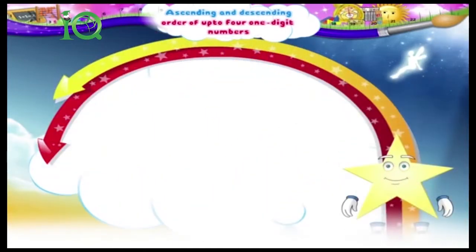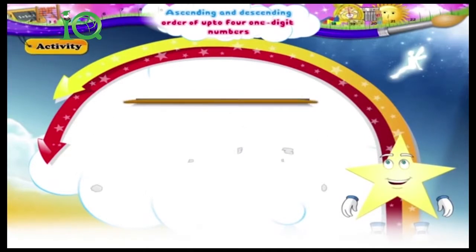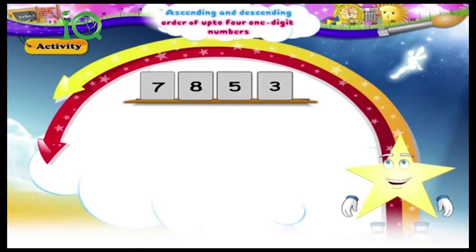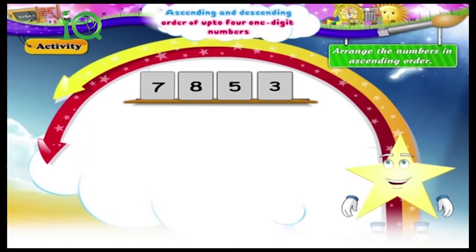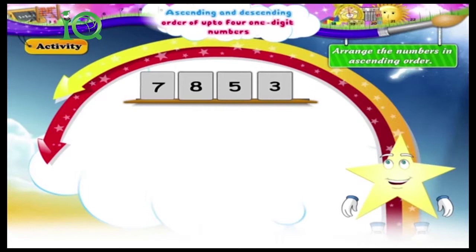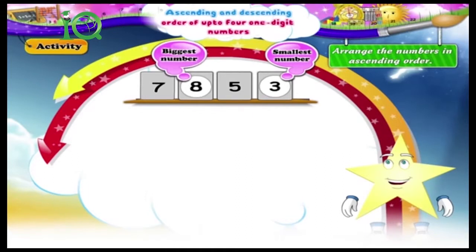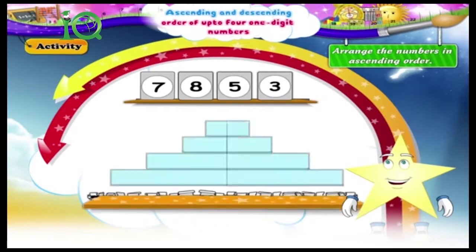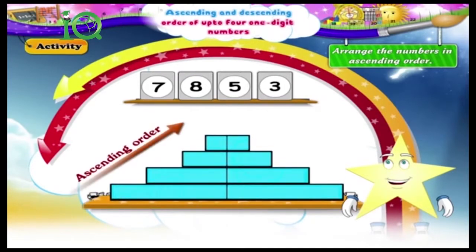Now let us do an activity together. Here are sets of four numbers. We have to first circle the smallest number, then the biggest number, and then put the numbers in ascending order. Seven, eight, five, three. The smallest number is three, the biggest number is eight. Between seven and five, five is the smaller number. The numbers in ascending order are three, five, seven, eight.